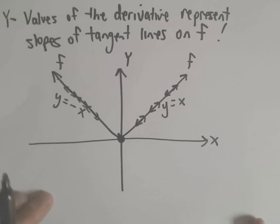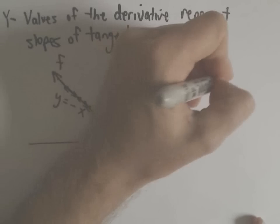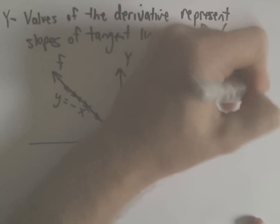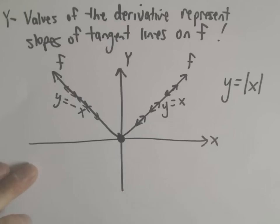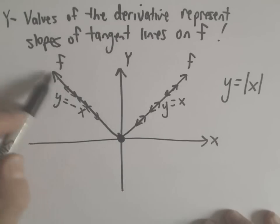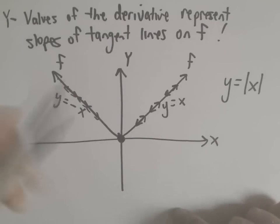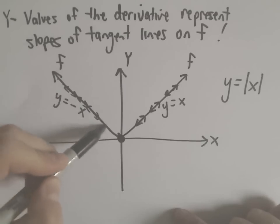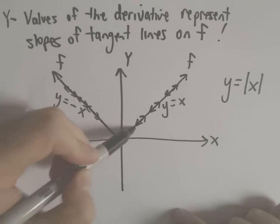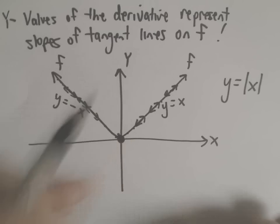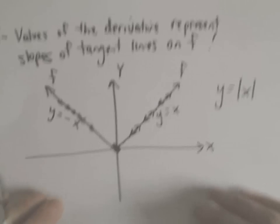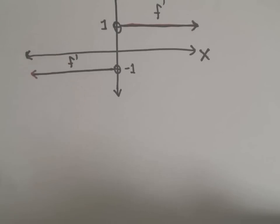So this would be a possible graph. This actually looks a lot like the graph of the absolute value of x. If you think about y equals absolute value of x, the tangent lines are always negative 1 for x less than 0, and then they always become positive 1 for x greater than 0 — and that's exactly what our original derivative graph said.